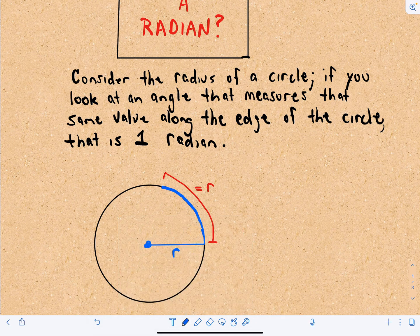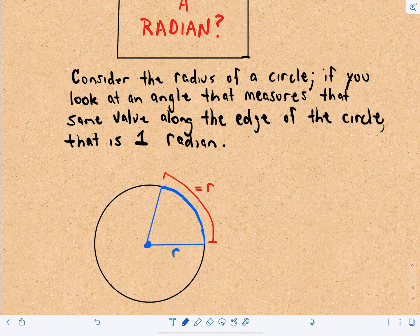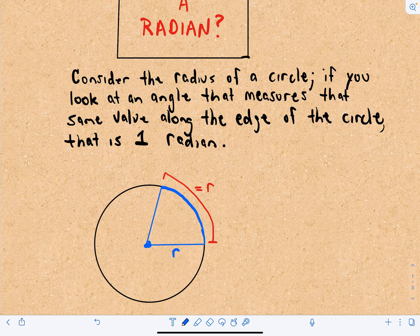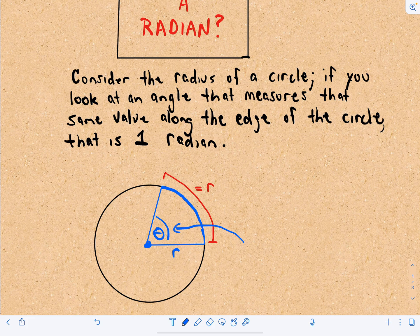And if we look at that angle that we've now created, that angle is simply one radian. That's all it means.